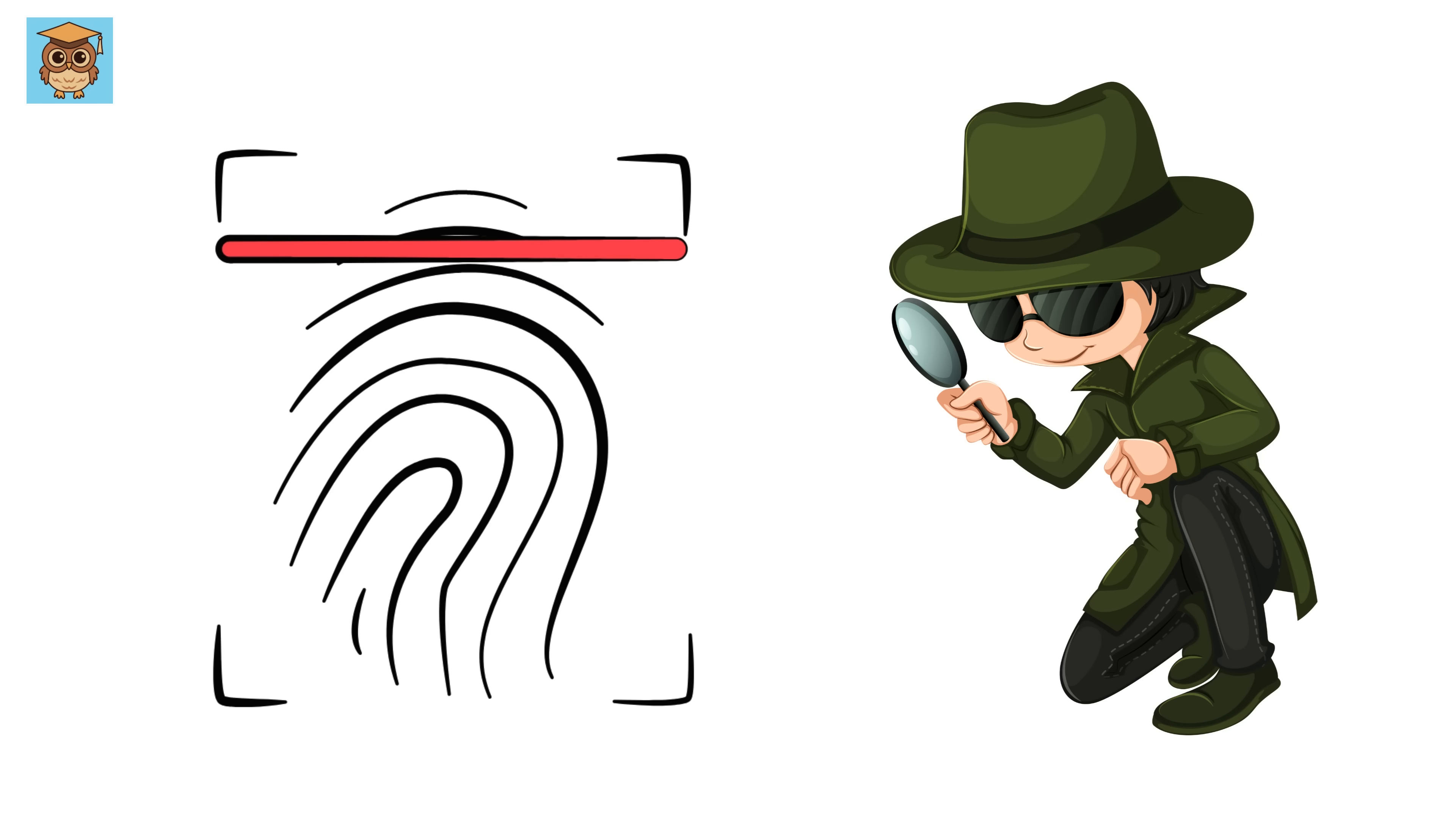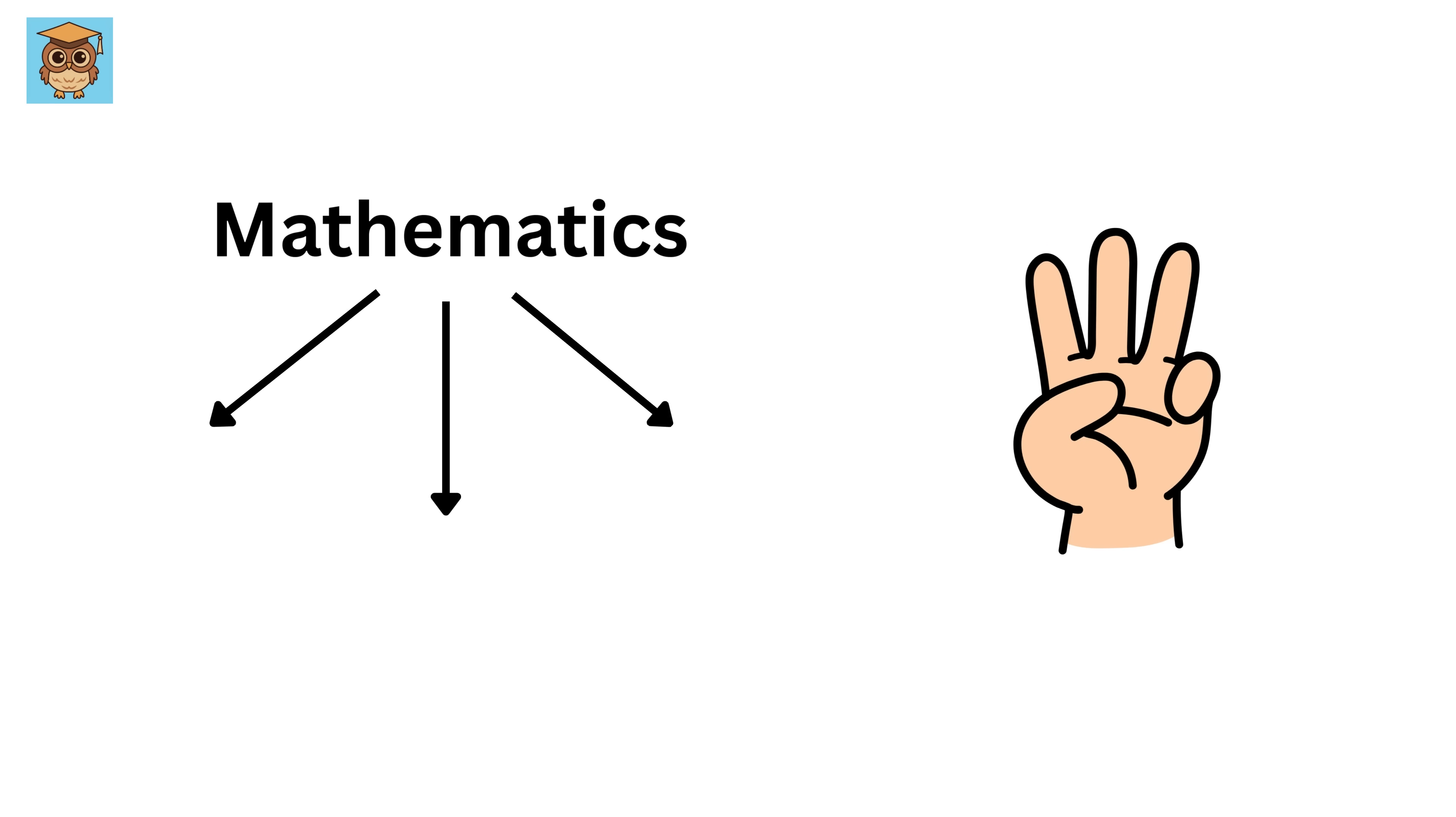Today, we'll break down every major branch of mathematics in the simplest way possible. These branches are divided into three main categories, namely pure mathematics or theoretical maths, then applied mathematics or the math in real-world applications.